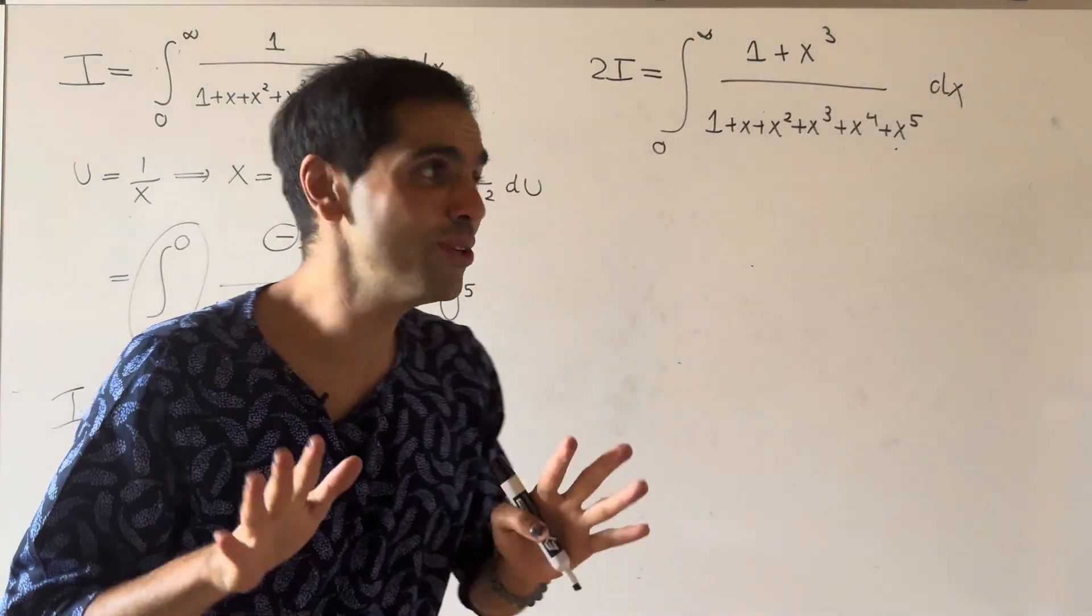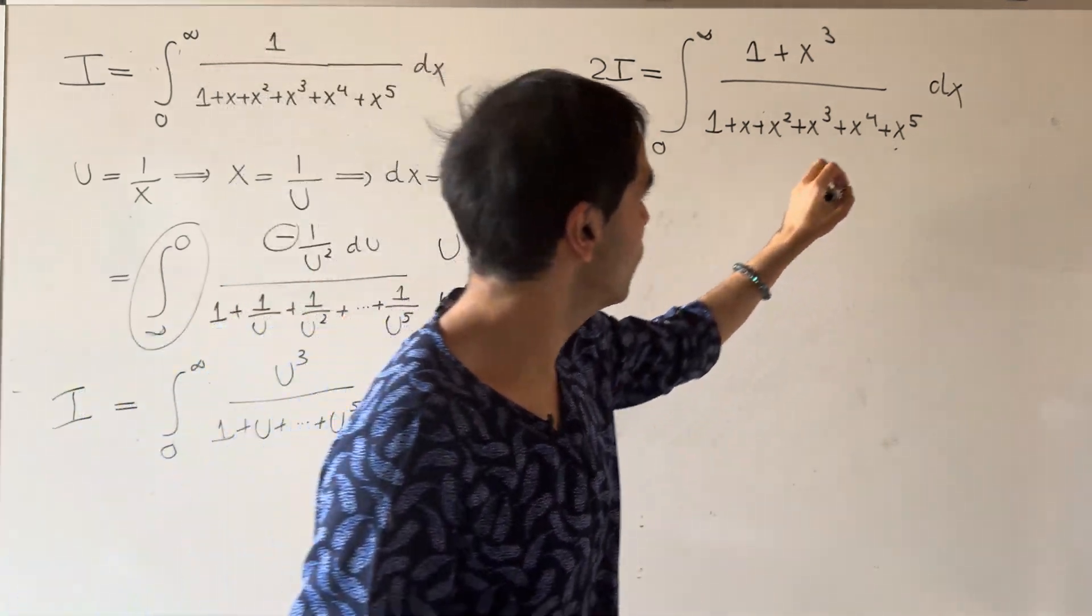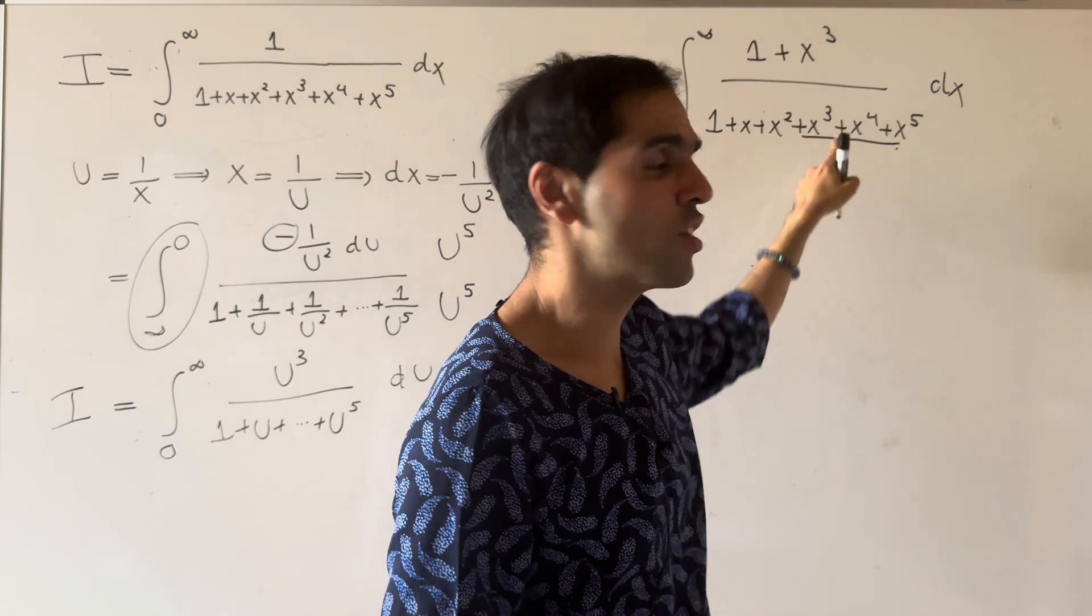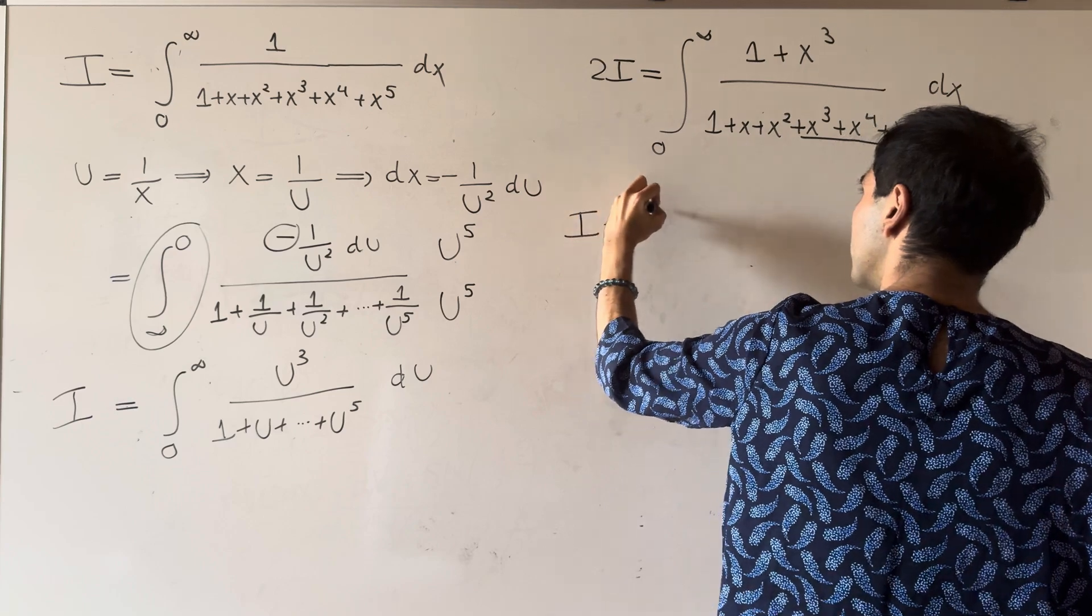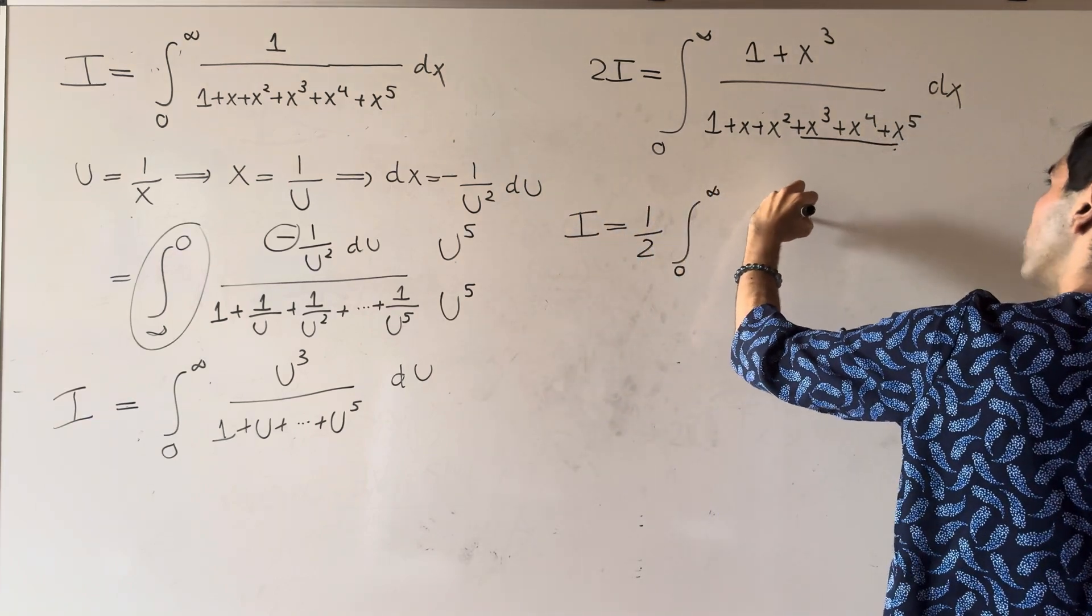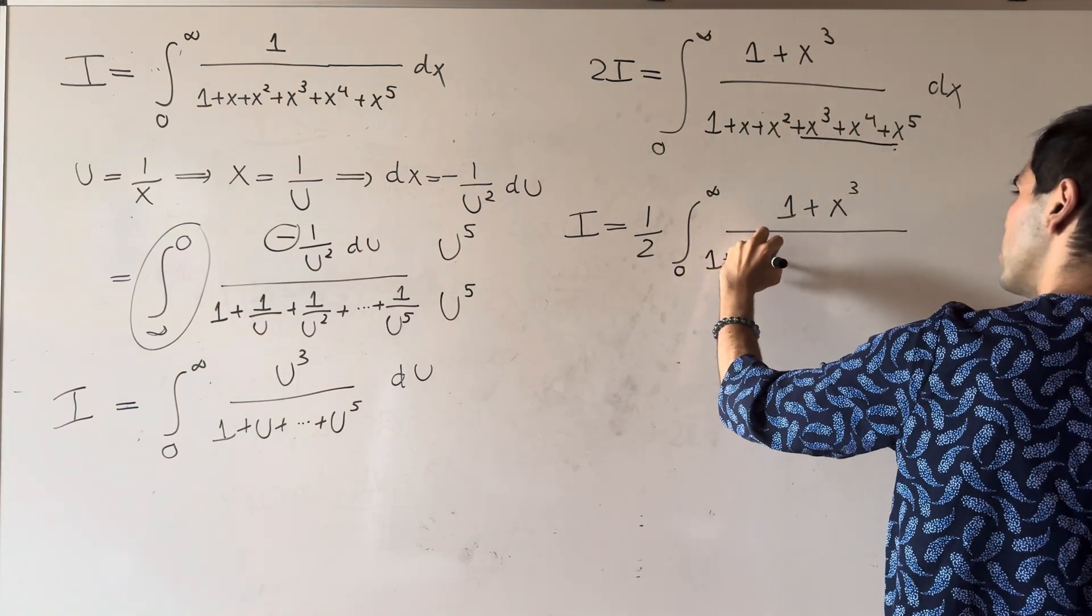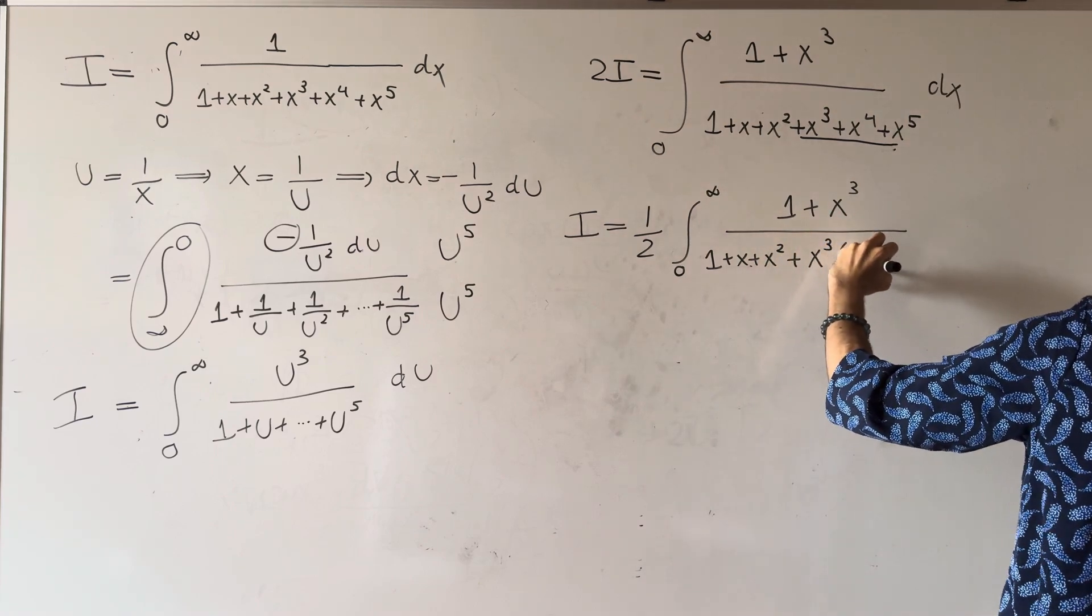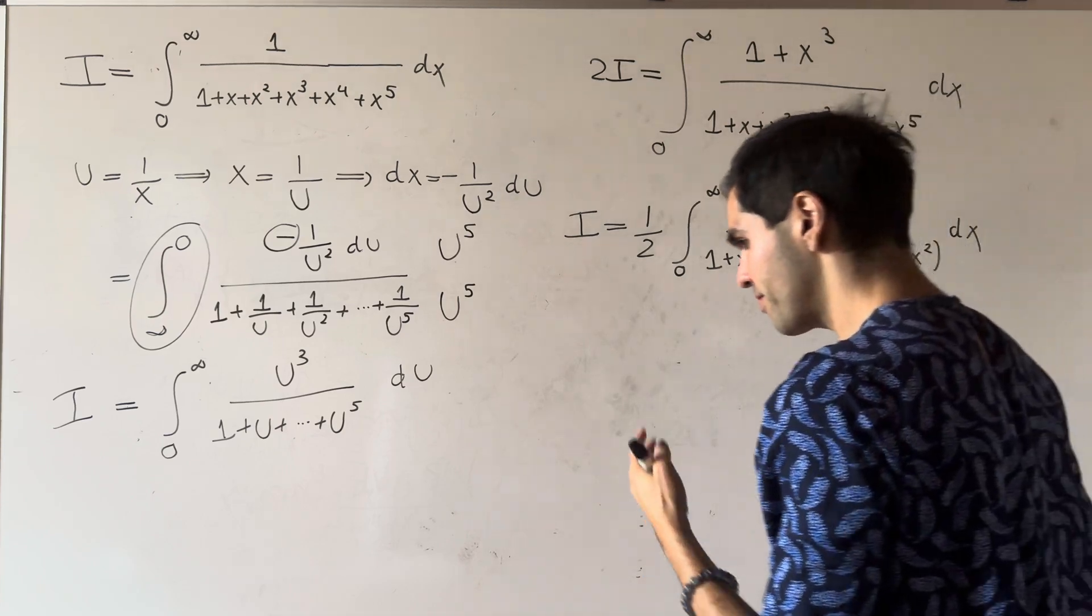Now, here comes a beautiful part of the video, which really works specifically for this integral. Let's look at this part and factor out x cubed. So what we get is I equals 1 half of the integral from 0 to infinity of 1 plus x cubed over 1 plus x plus x squared plus x cubed times 1 plus x plus x squared. There it is.